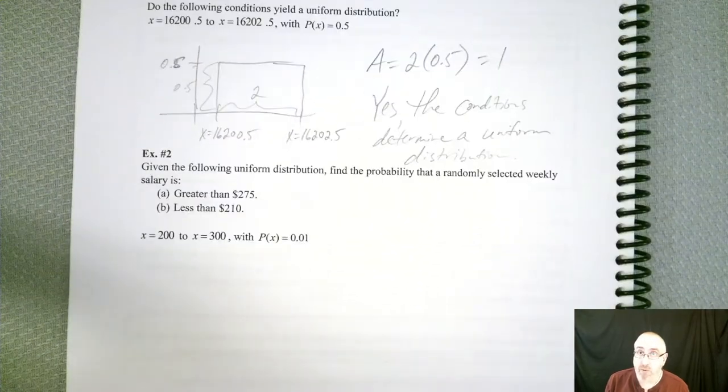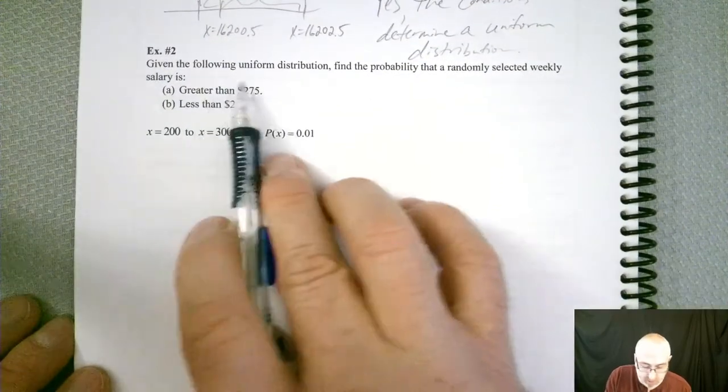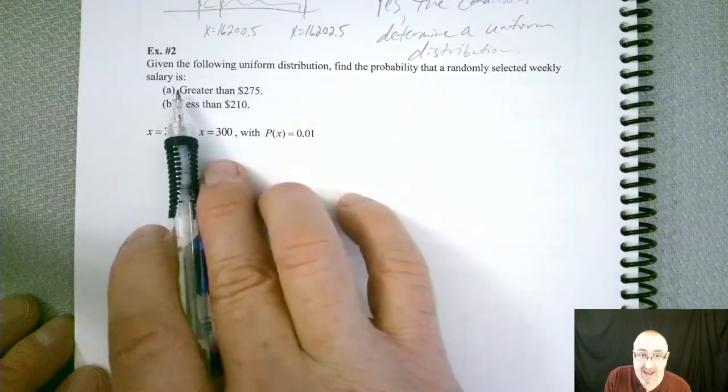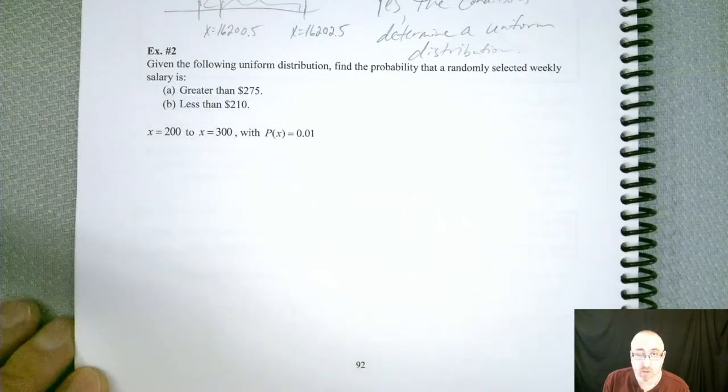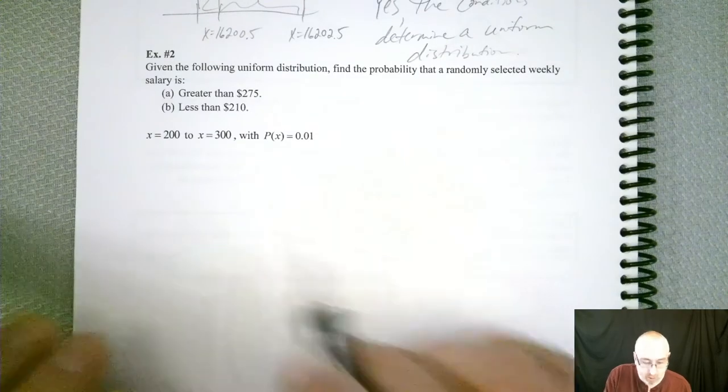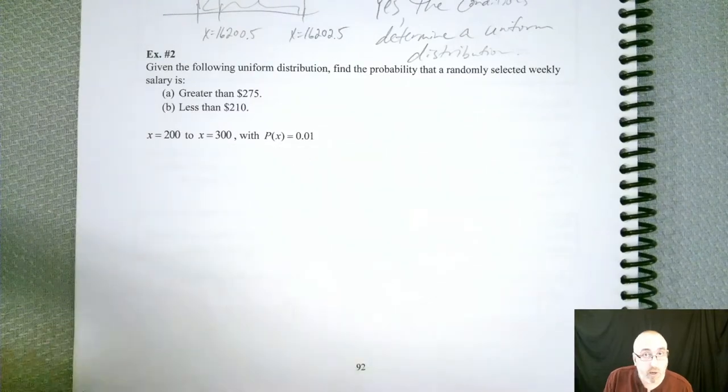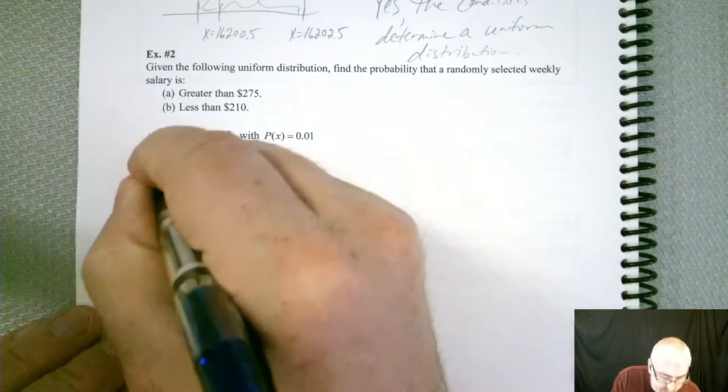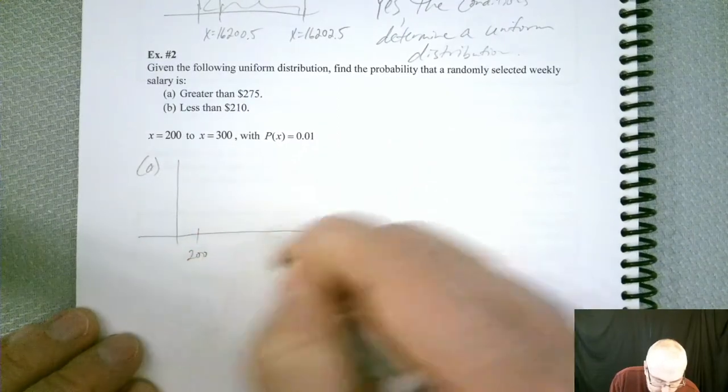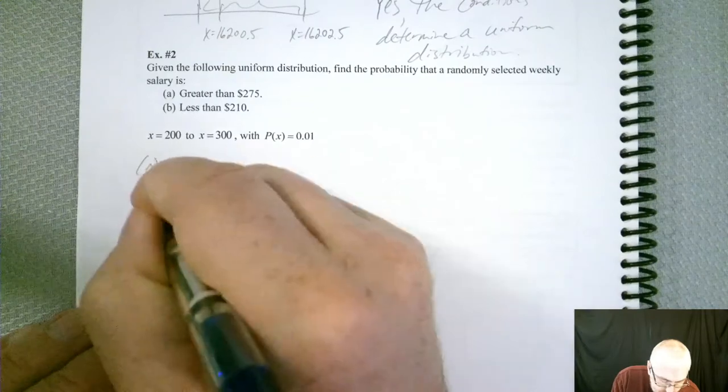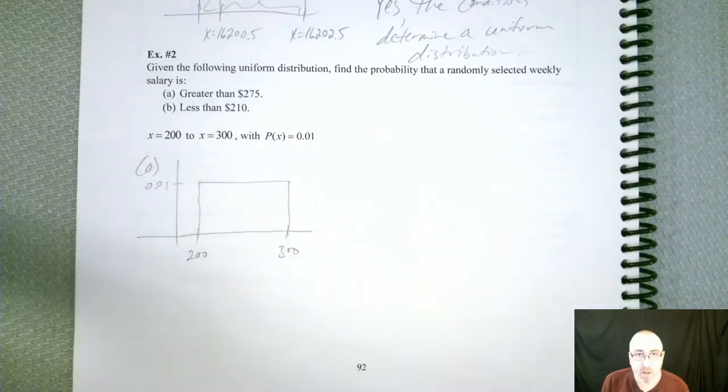All right, so now that we know when we have a uniform distribution, what can we do with that? Let's take a look at the second example. So we have, given the following uniform distribution, find the probability that a randomly selected weekly salary is greater than $275 and then less than $210. So now we're looking at probabilities. So here's our world. x is equal to 200, x is equal to 300, with p of x equal to 0.01. So we're going to need a world for each of these parts. So let's do part A first. Let's get our world.